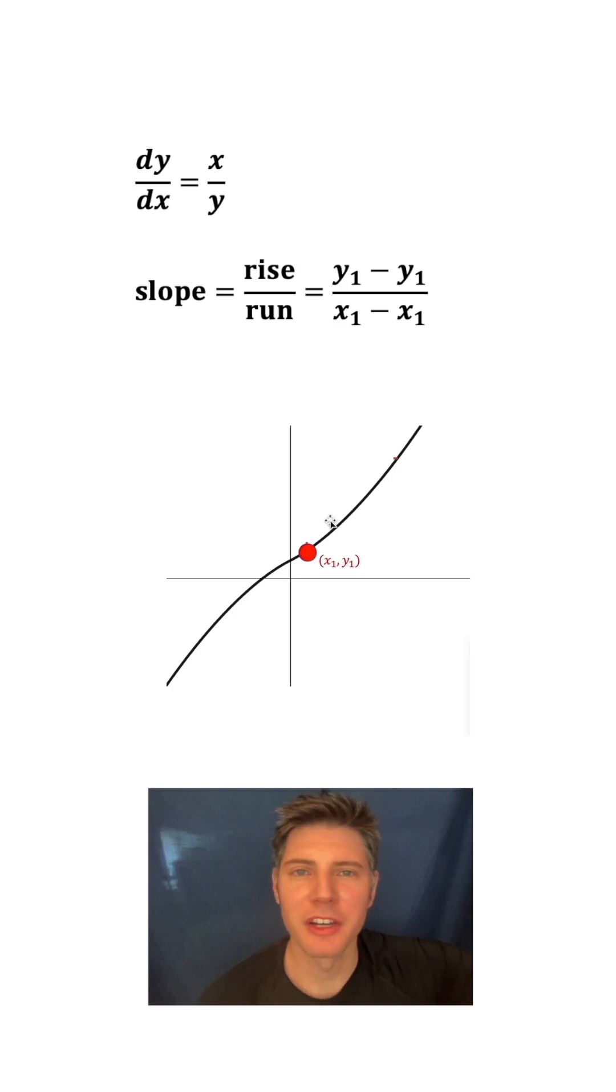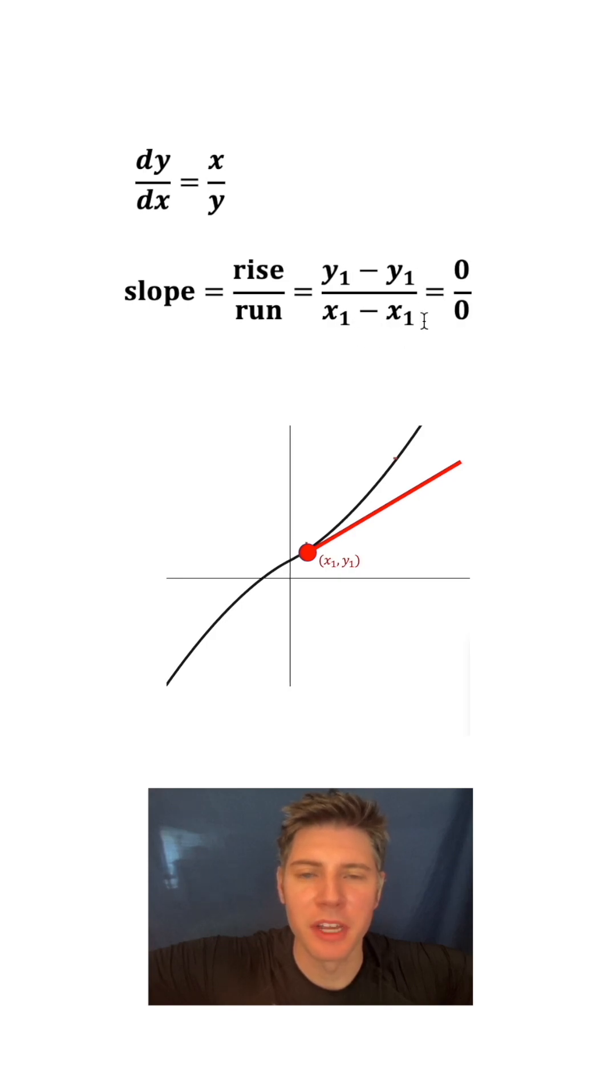So what is the instantaneous slope? Imagine you're riding a roller coaster with a headlight on it. This is the direction the headlight would go. Now, if we subtract y₁ minus y₁, x₁ minus x₁, we get 0 over 0. But we can tell right now this slope is not 0 over 0—it has a value. So instead of calling it 0...